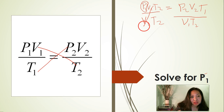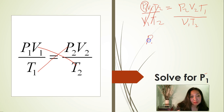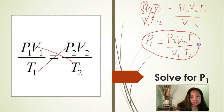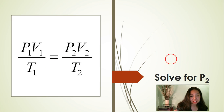Cancel V1 on the top and V1 on the bottom; cancel T2 on the top and T2 on the bottom. So we're going to have P1 is equal to P2 times V2 times T1 divided by V1 times T2. This is the formula to solve for the initial pressure.